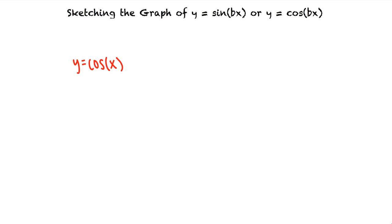To sketch this graph we can plot five key points by substituting 0, pi halves, pi, 3 pi halves, and 2 pi into the function for x.